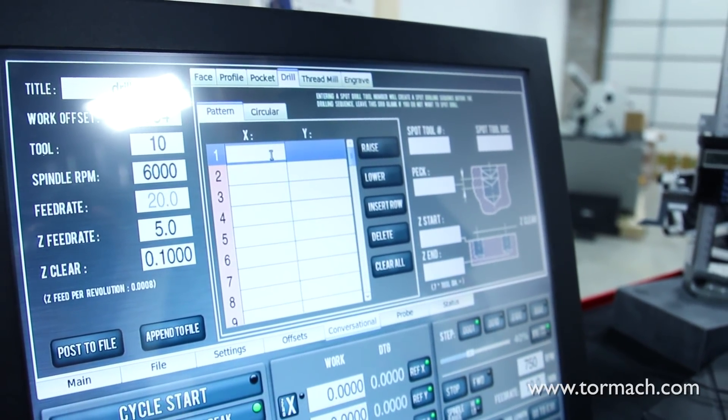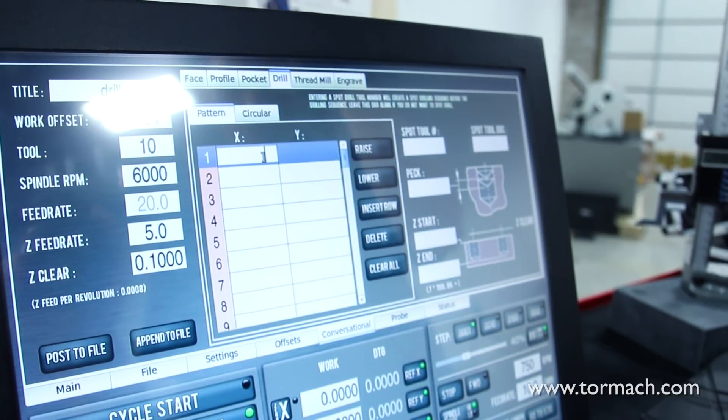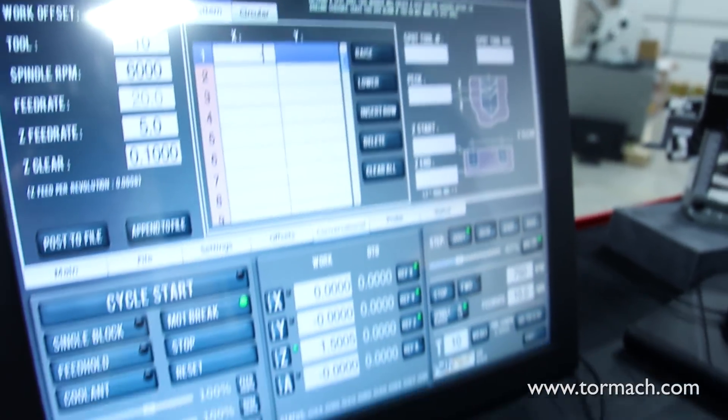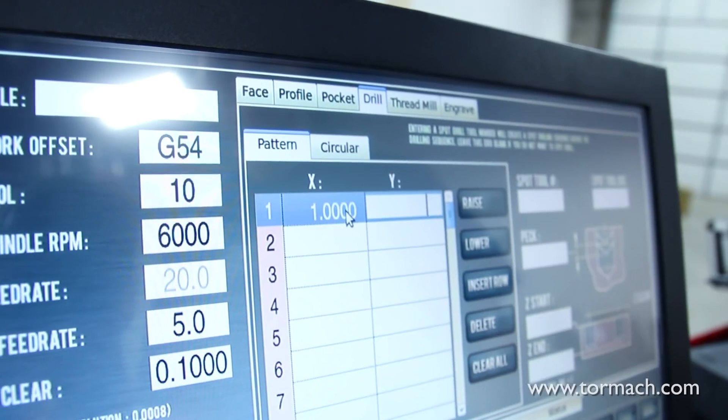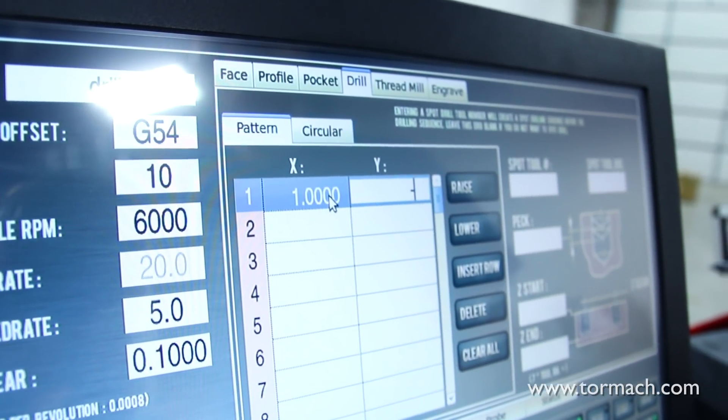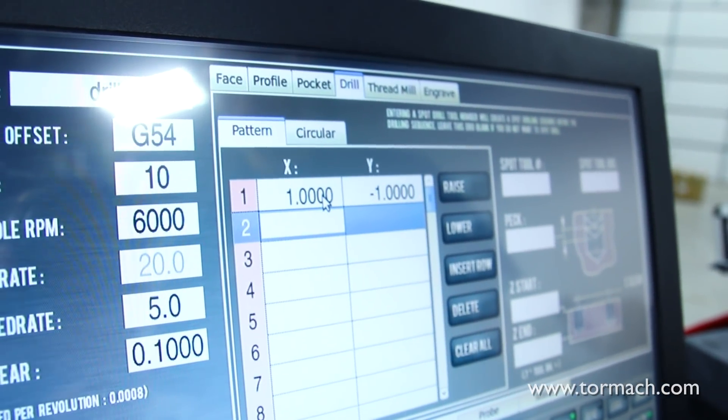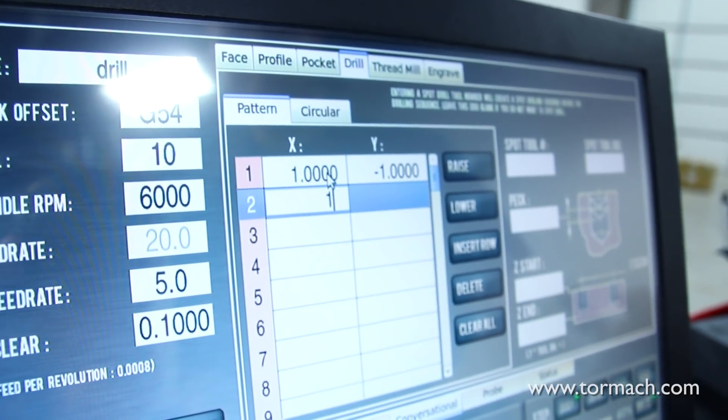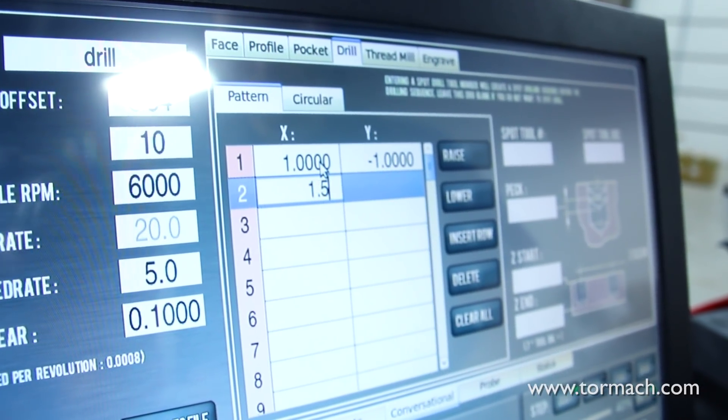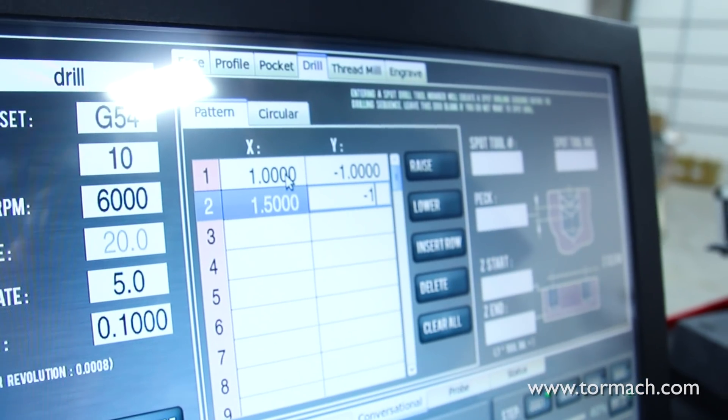If we want to put in a couple hole locations here we can just enter our values. We'll go one inch in X, minus one inch in Y, and we'll do a second hole at 1.5 inches in X and continue at one inch in Y.